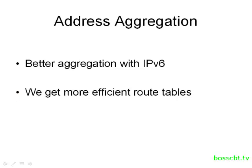Another big change with IPv6 is address aggregation. Because the length of the address is so much bigger than what we had in version 4, we get a lot more benefits when it comes to aggregating addresses — we get better aggregation with IPv6. This leads to more efficient route tables because we don't have to have as many individual routes listed in our tables, which will improve performance on the network.